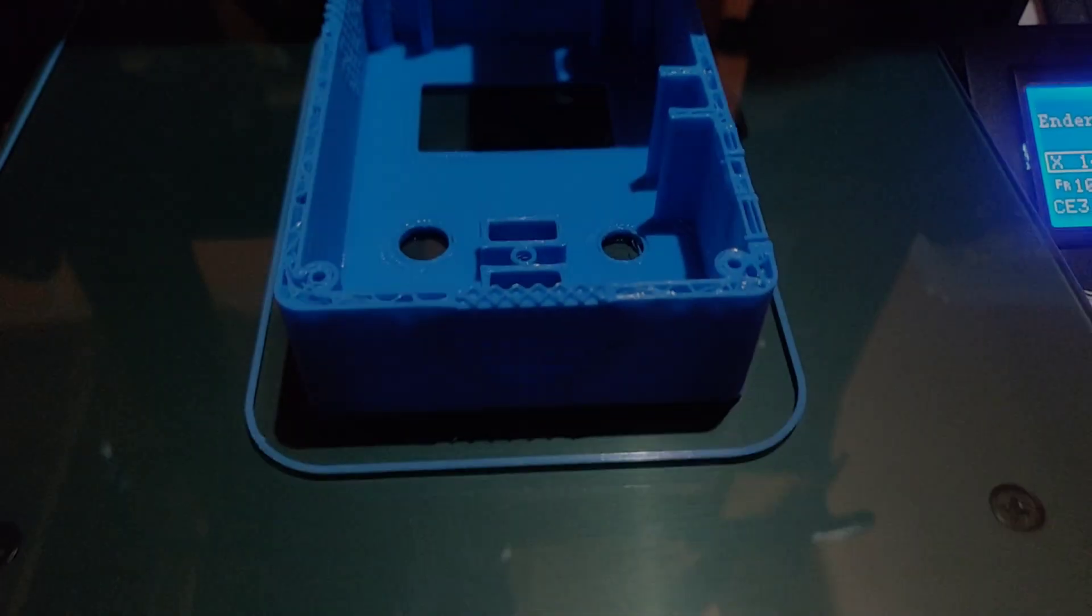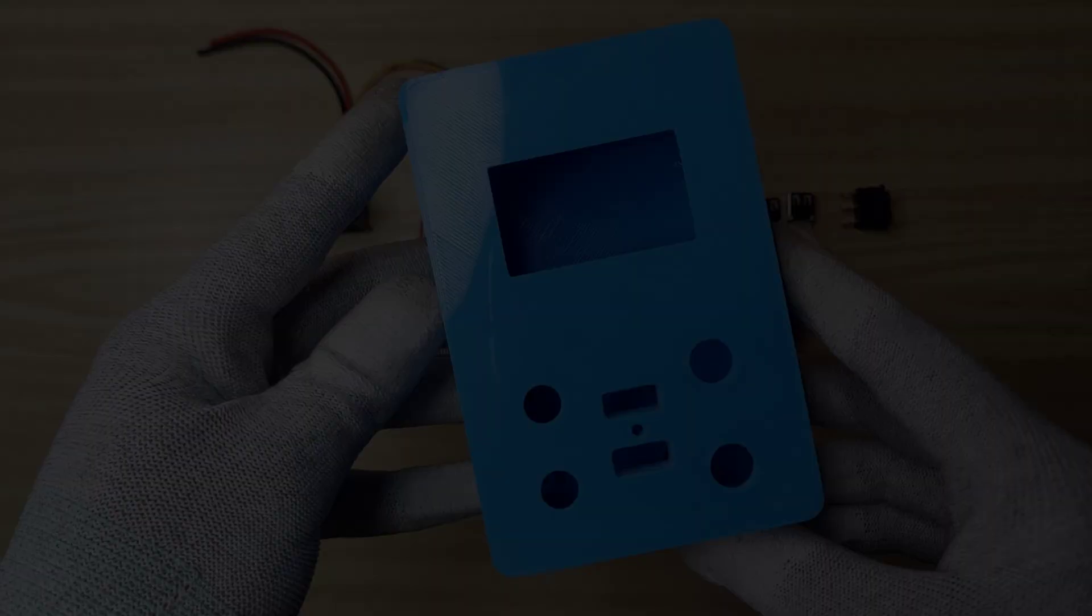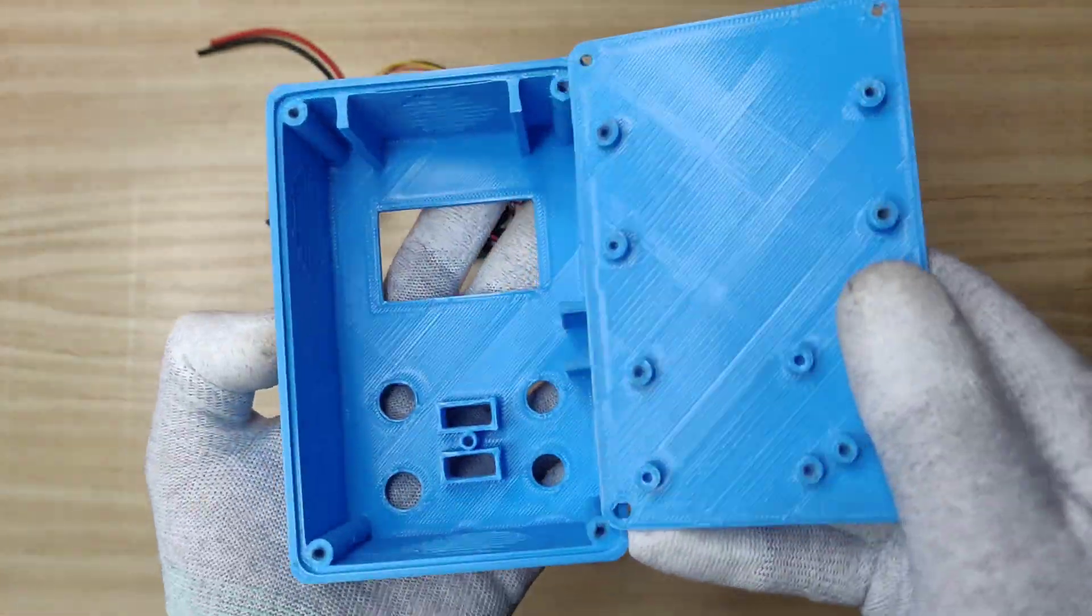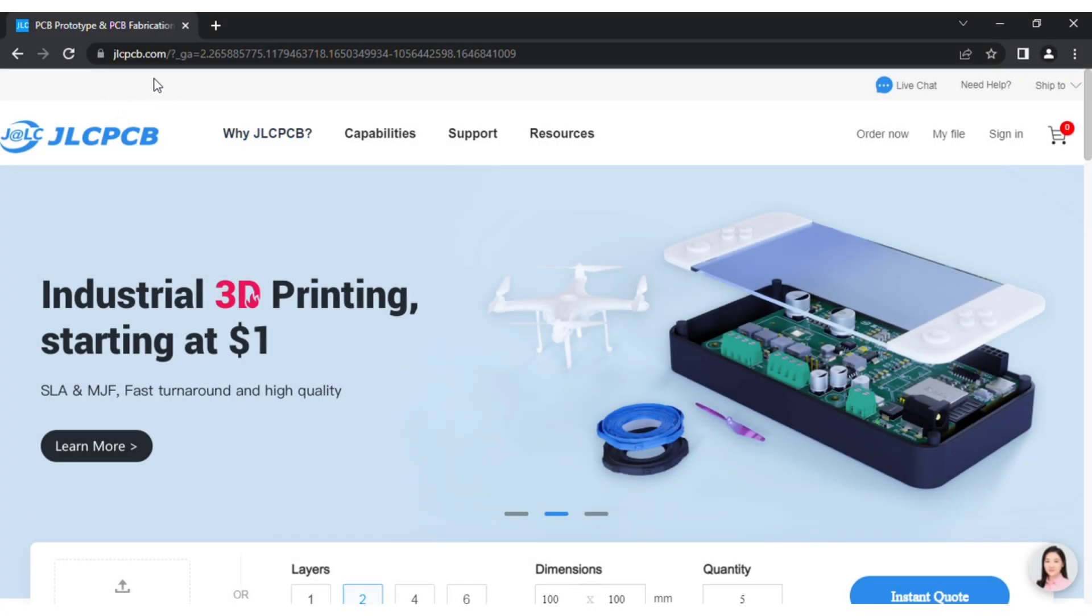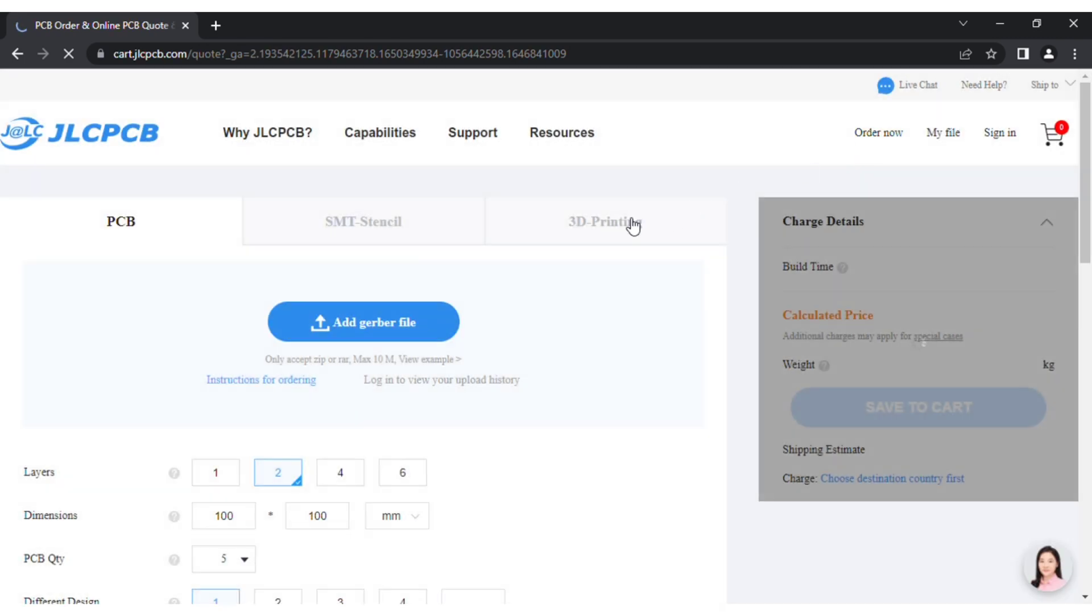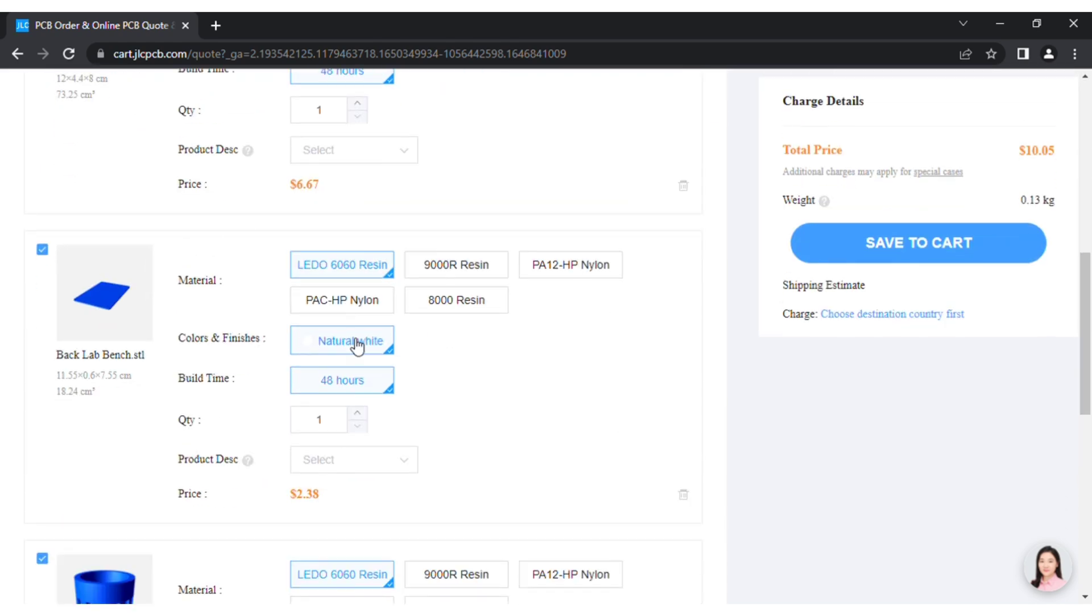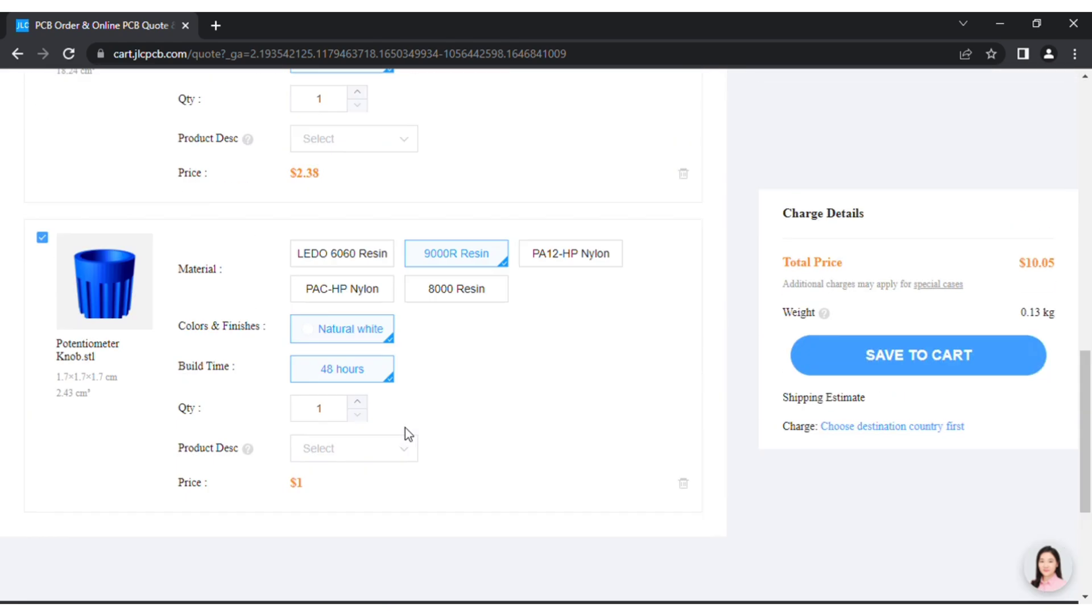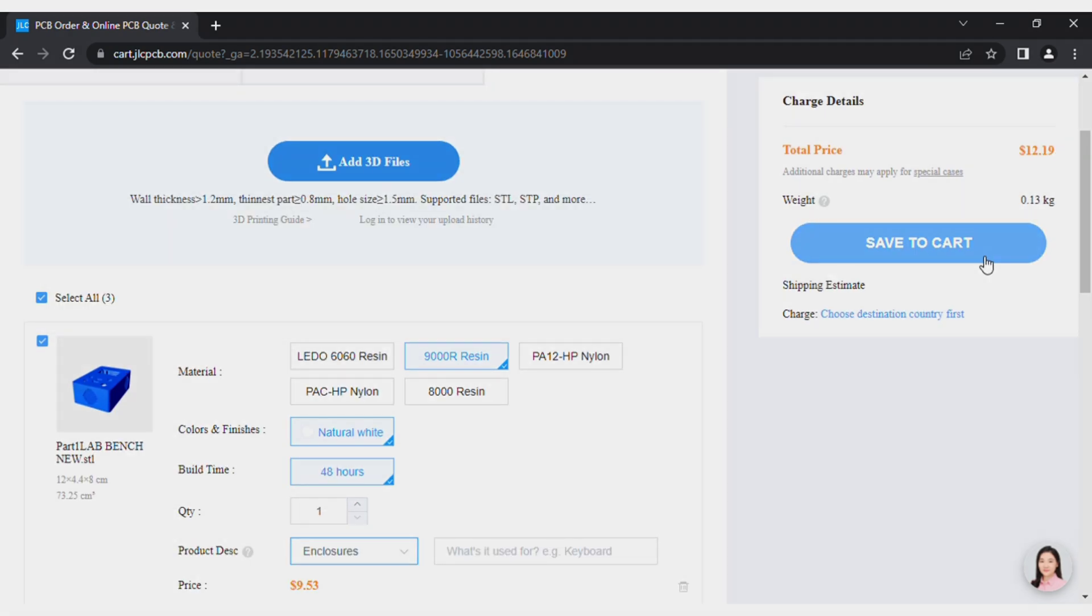I designed and printed enclosure for this project using 3D printer and it came out awesome. If you don't have 3D printer, just visit jlcpcb.com, click on order now, then click on 3D printing and upload 3D files I provided. Download link is in video description. Choose 9000R resin option and select as enclosure and save to cart for checkout.